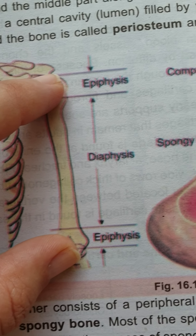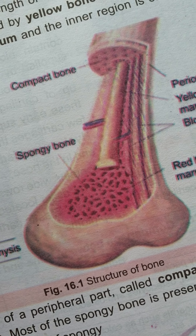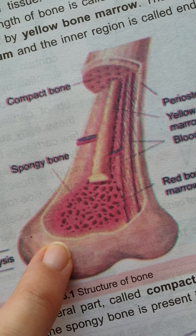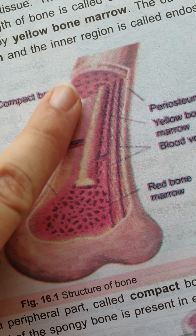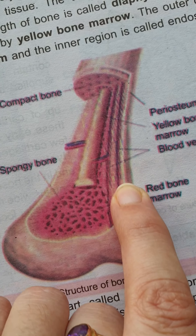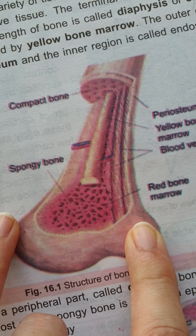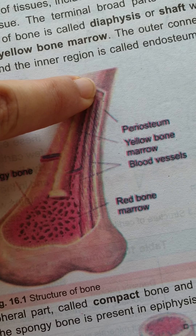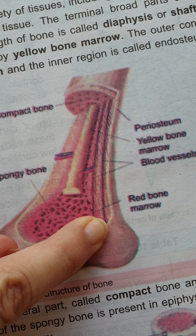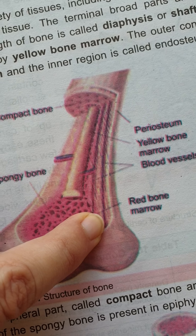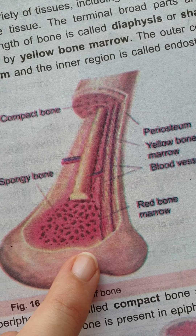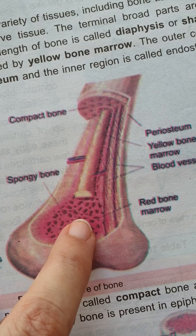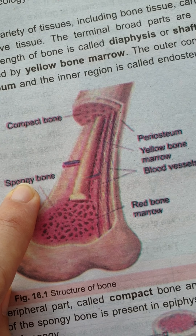Coming to the internal structure of the bone: the outer connective tissue surrounding the bone is known as periosteum. Internally it consists of another layer of connective tissue, the second layer, which is known as endosteum. Outer is periosteum, internal is endosteum. Inside the endosteum there is red bone marrow, and this portion consists of spongy bone.